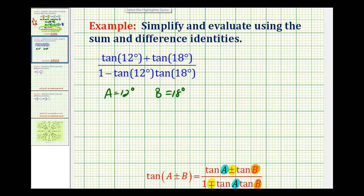This is equal to the tangent of 12 degrees plus 18 degrees, which equals the tangent of 30 degrees. We can use that 30-60-90 reference triangle again to determine this function value.